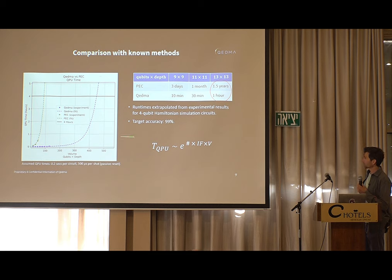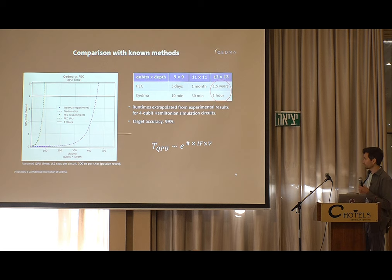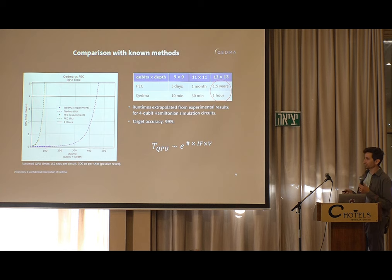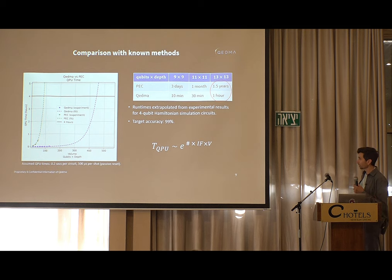What drives these significant differences is that error mitigation is exponential — it's theoretically proven. Error mitigation scales exponentially with the total infidelity in your circuit: infidelity per two-qubit gate times the number of two-qubit gates. Everything is exponential, so if you double that number the time explodes; if you halve it, the time shrinks significantly.